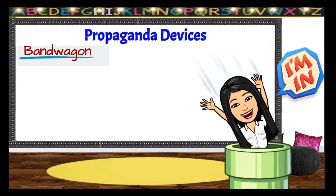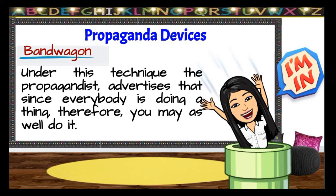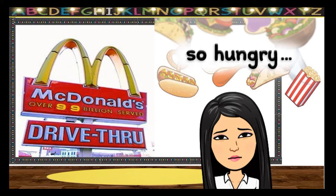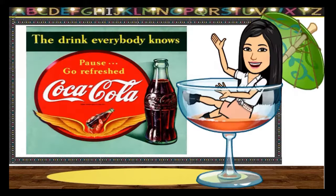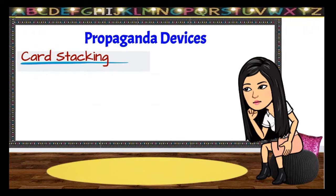Next is bandwagon. Under this technique, the propagandist advertises that since everybody is doing a thing, therefore you may as well do it. Advertisers know that it is human nature to not want to be the one left out. They know that if they convince you that everyone else is buying their product or using their service, you will want to jump on the bandwagon too. For example, McDonald's have served 99 billion people — there must be something special there, right? And we would not want to miss out on that. Coca-Cola also tries to convince us that everybody knows this drink, so since none of us wants to be left out, we buy and try it too.